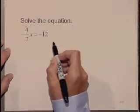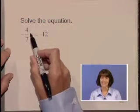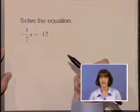Here we wish to solve the equation negative four-sevenths x is equal to negative 12. Now let's think of something that we can multiply negative four-sevenths by to cancel it out, to get rid of it.